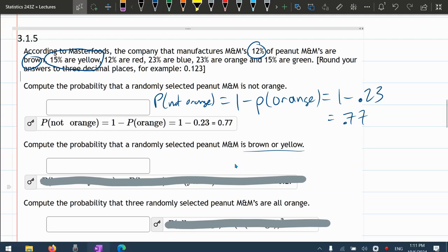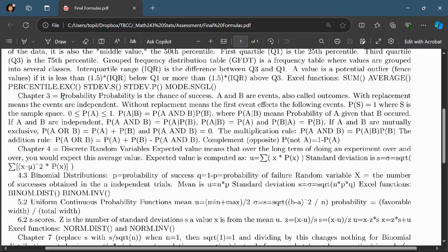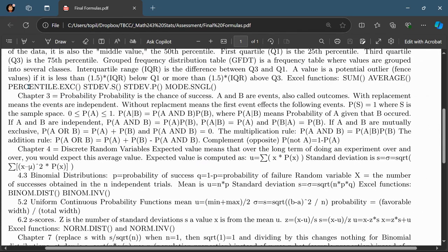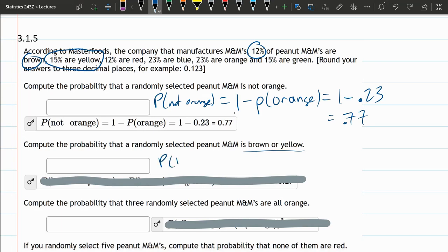And if we go to our formula page, somewhere up here is OR. The probability of A or B is the probability of A plus the probability of B. So that's the formula we want right there. Now we'll go back. Brown or yellow, I'm going to just do probability of B plus probability of Y.